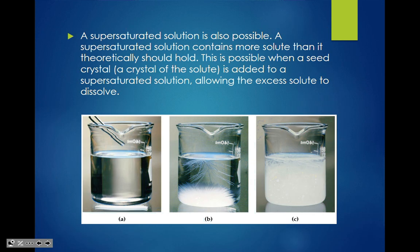A supersaturated solution contains more solute than it theoretically should hold, and this only happens when you heat things up. If you take sugar in water — where the solubility is, say, 50 grams per 100 mils — and heat the water, you can add more sugar and it will dissolve, creating a supersaturated solution. The moment you add just one tiny seed crystal of solute to a supersaturated solution, all the excess suddenly recrystallizes. That's how you get those rock candy crystal lollipops.